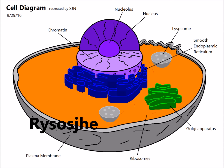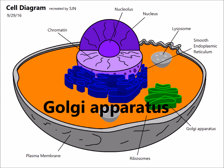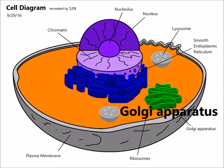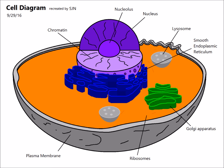Moving on to the Golgi apparatus, which produces, sorts, packages, and transports material around the cell. In this diagram, I colored it green.